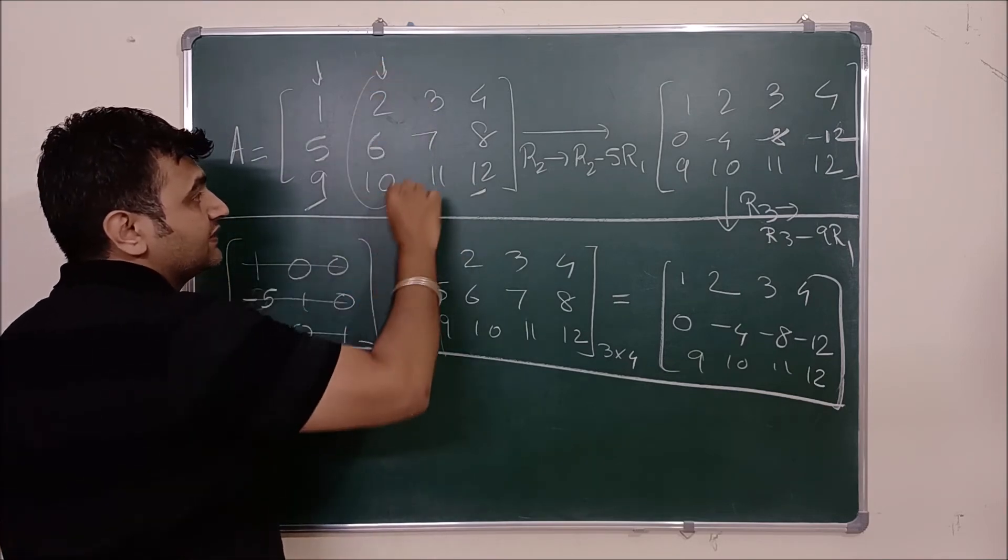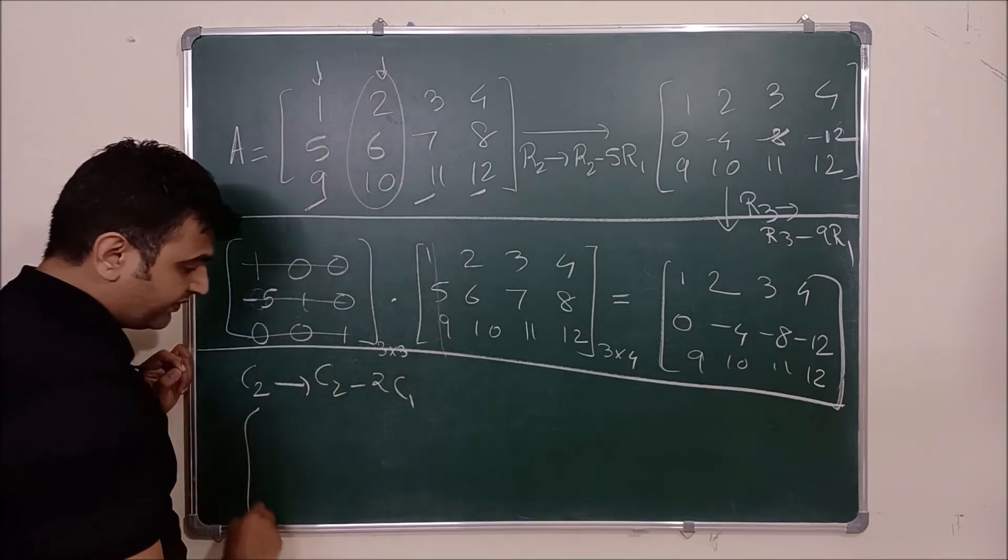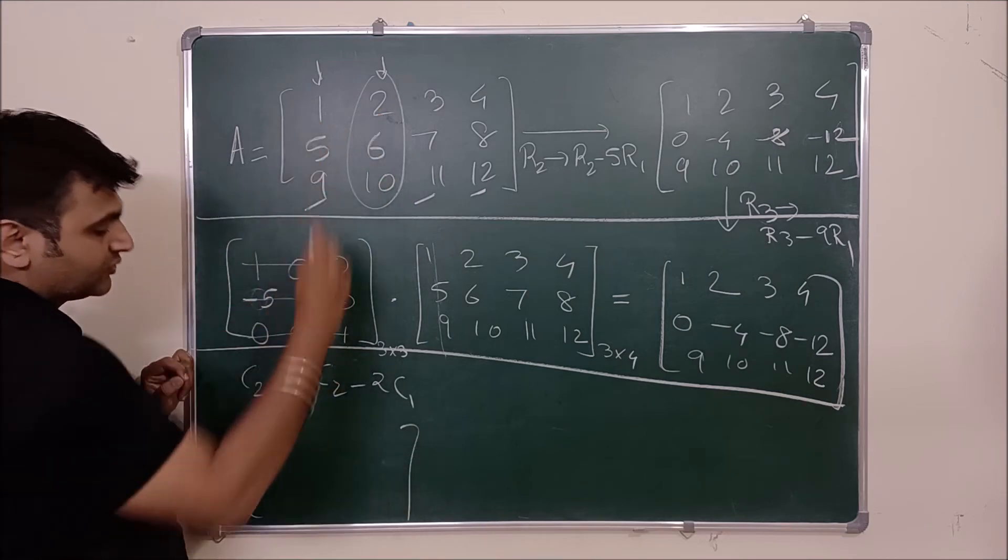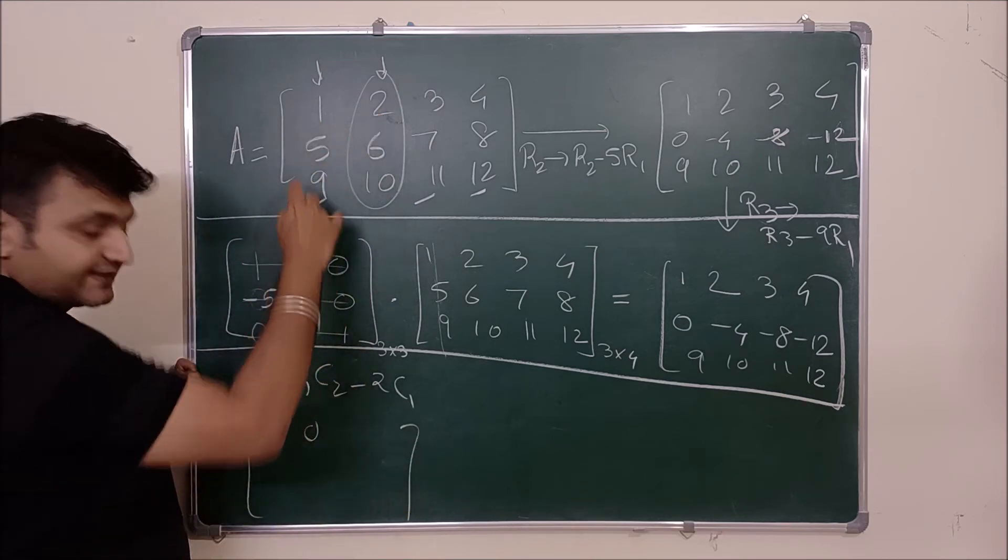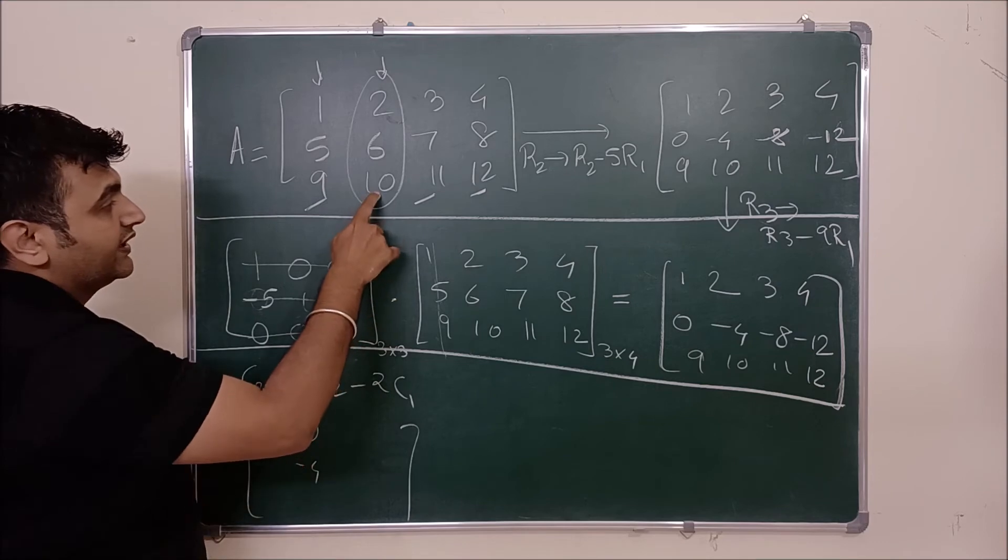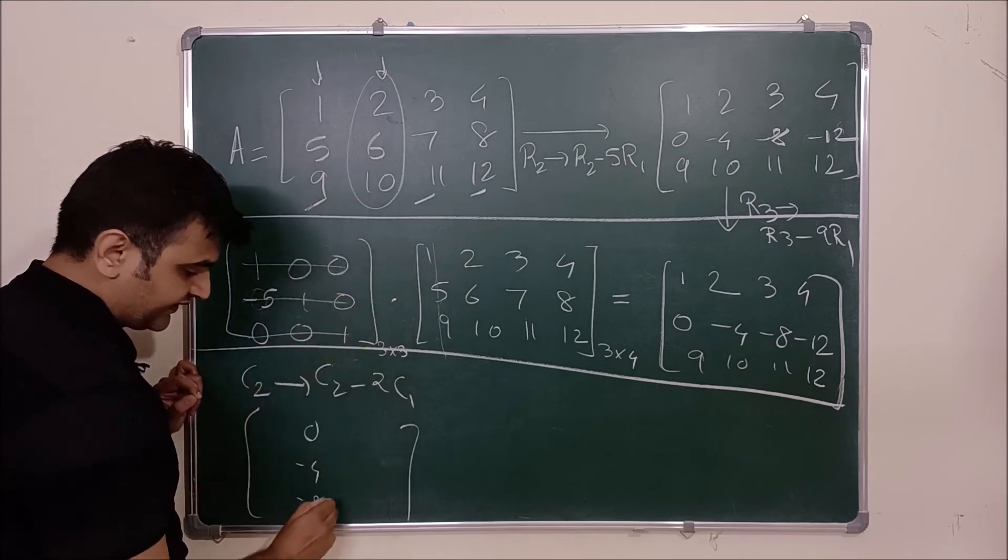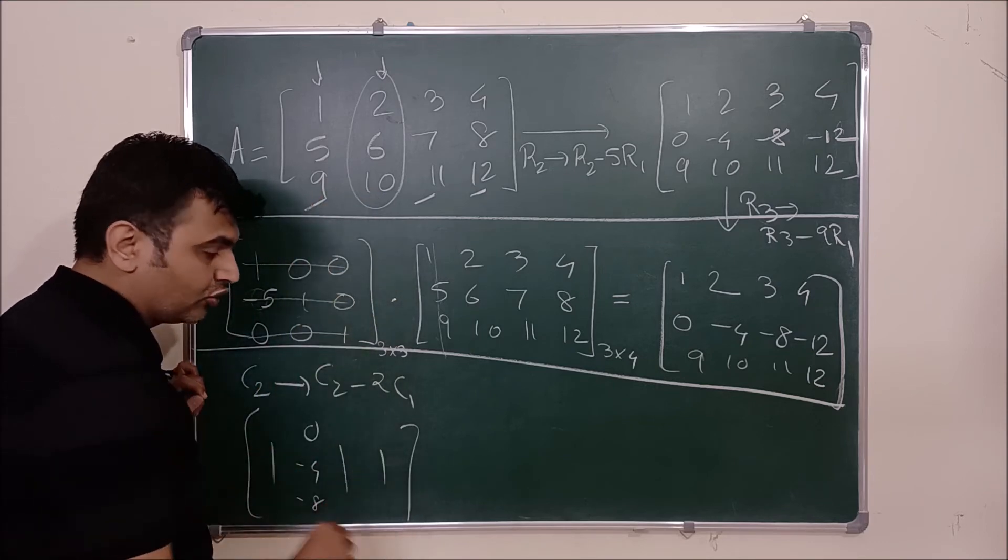There will be a change in the second column. So what will be the second column? It will be 2 minus 2, 0, 6 minus 10 is minus 4, 10 minus 18 is minus 8 and first third fourth column are same.